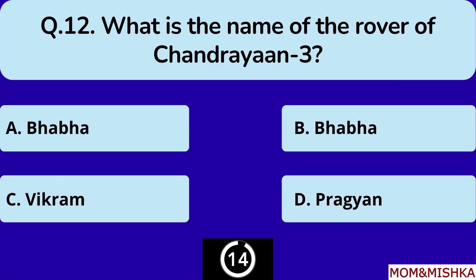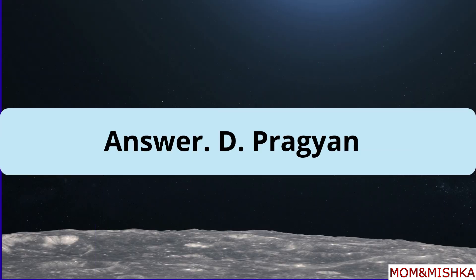What is the name of the rover of Chandrayaan-3? Pragyaan, option D.